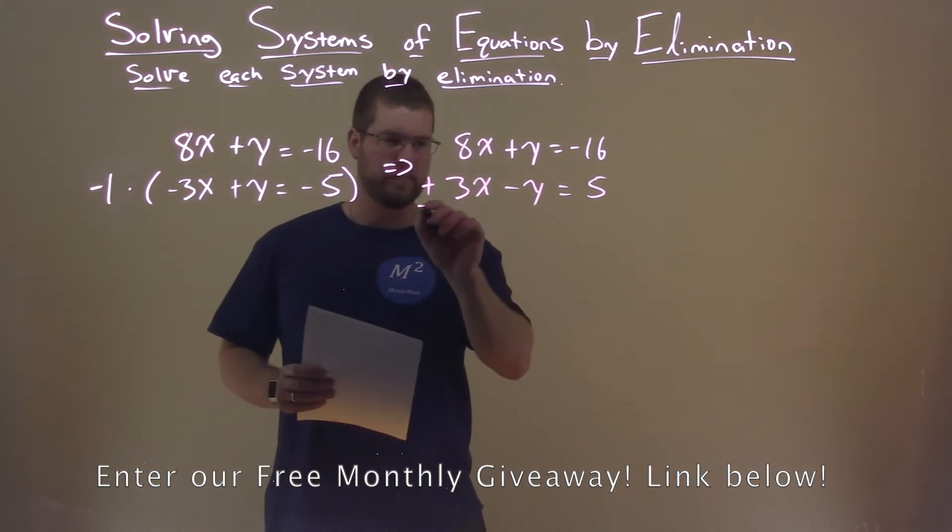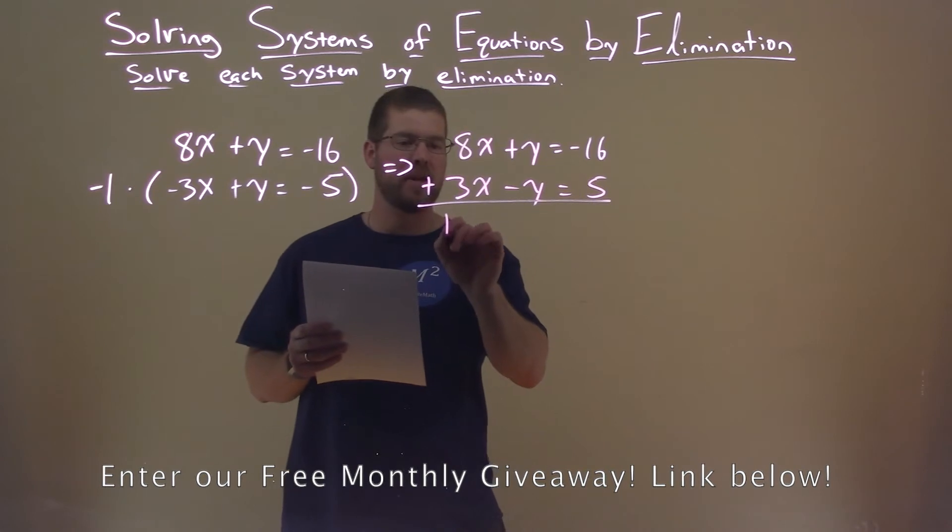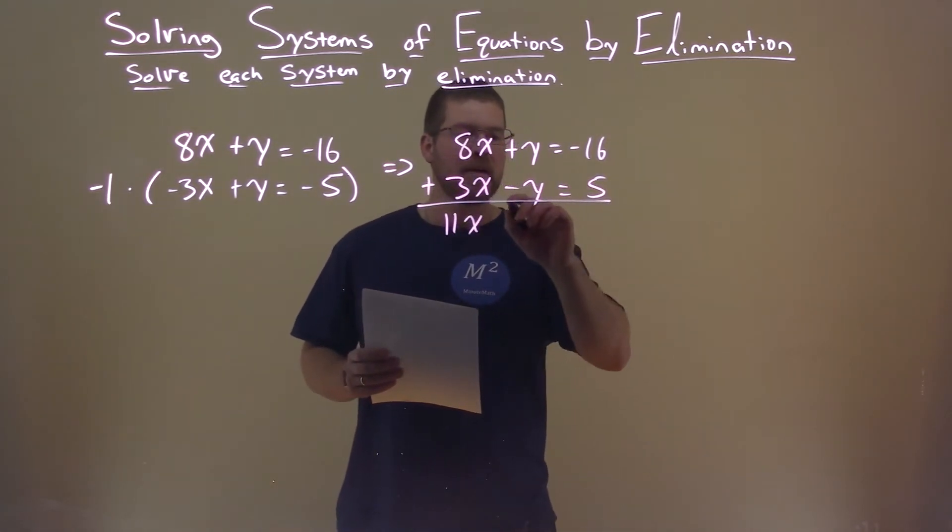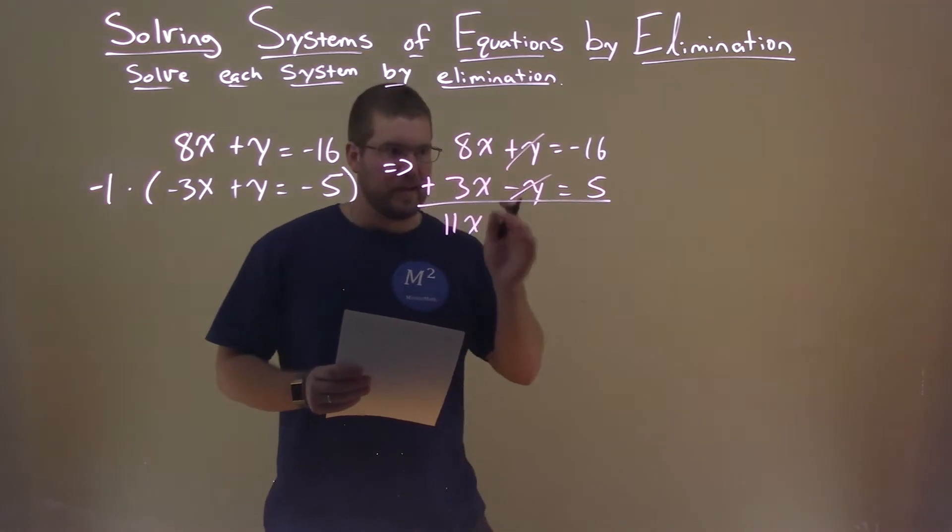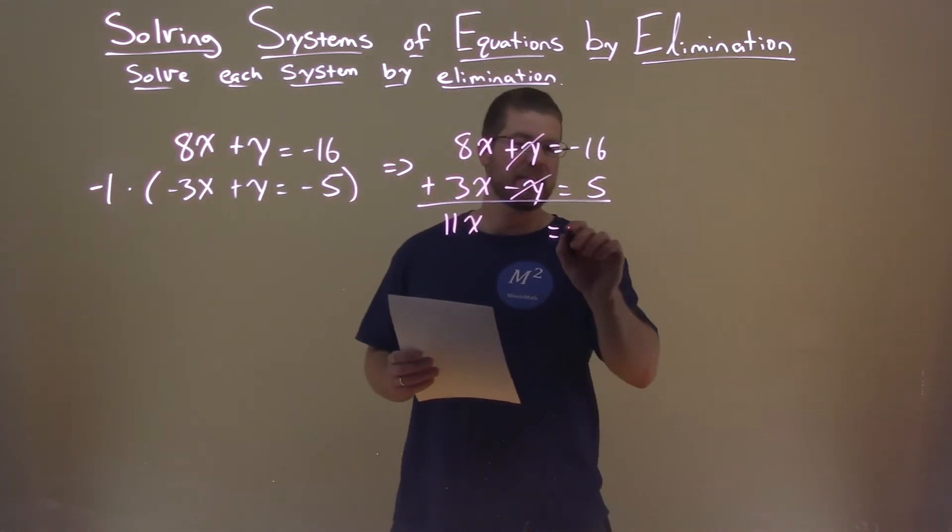Now we can add our two equations. 8x plus 3x gives us 11x. Y plus a negative y is 0, and eliminate it, hence the term. Negative 16 plus 5 is a negative 11.